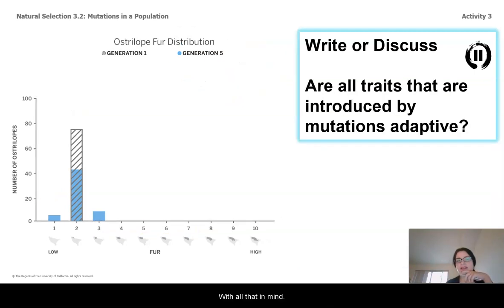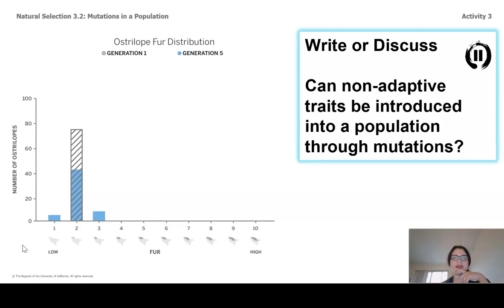With all of that in mind, are all traits that are introduced by a mutation adaptive? Can non-adaptive traits be introduced to a population through mutations?